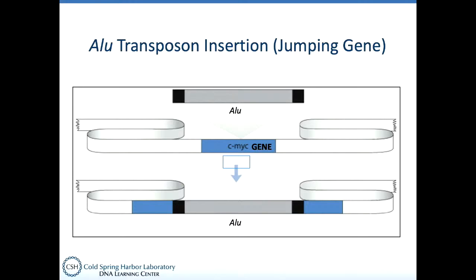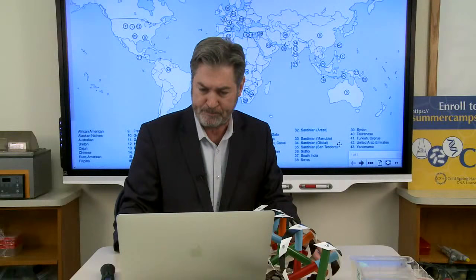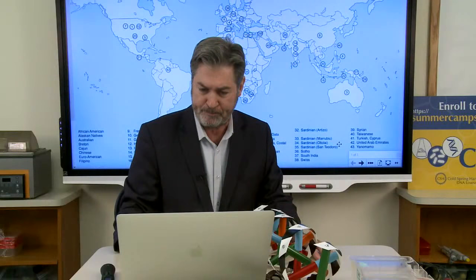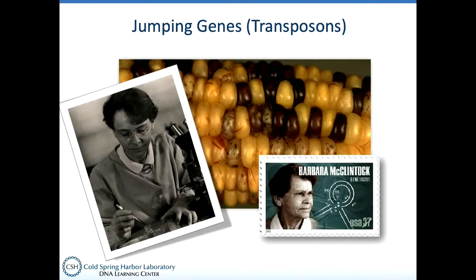Today we're going to look at an insertion of DNA that comes from a DNA transposon, or a jumping gene. This figure shows the ALU transposon moving into a gene called CMYK, resulting in a disruption of that gene. This particular ALU insertion is responsible for types of neurofibromatosis. Some ALU jumps cause human diseases, but most are innocuous. The whole idea that DNA moves around was discovered here at Cold Spring Harbor by Barbara McClintock in the 1950s, who won a Nobel Prize for this in 1983.